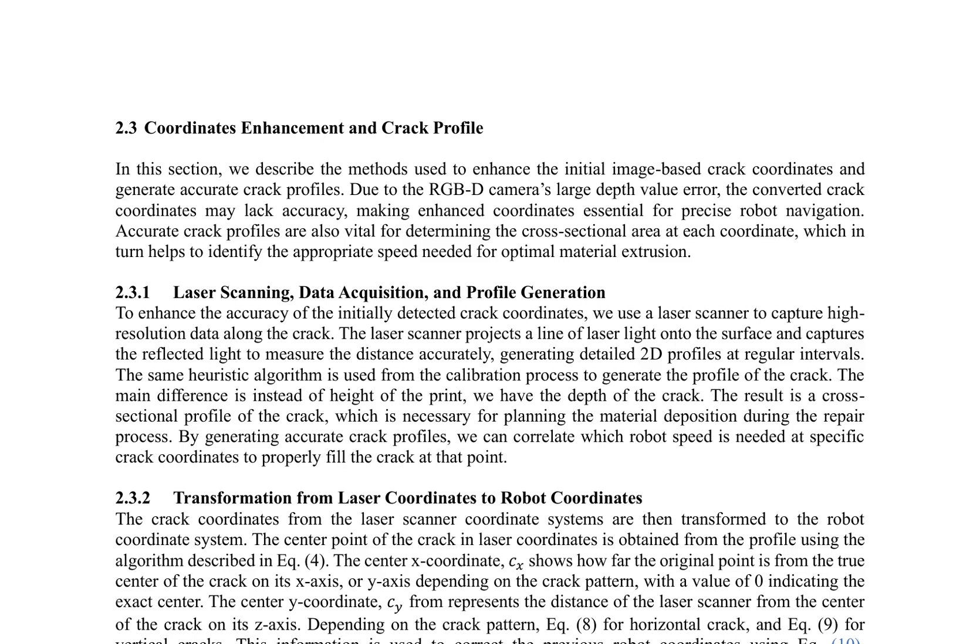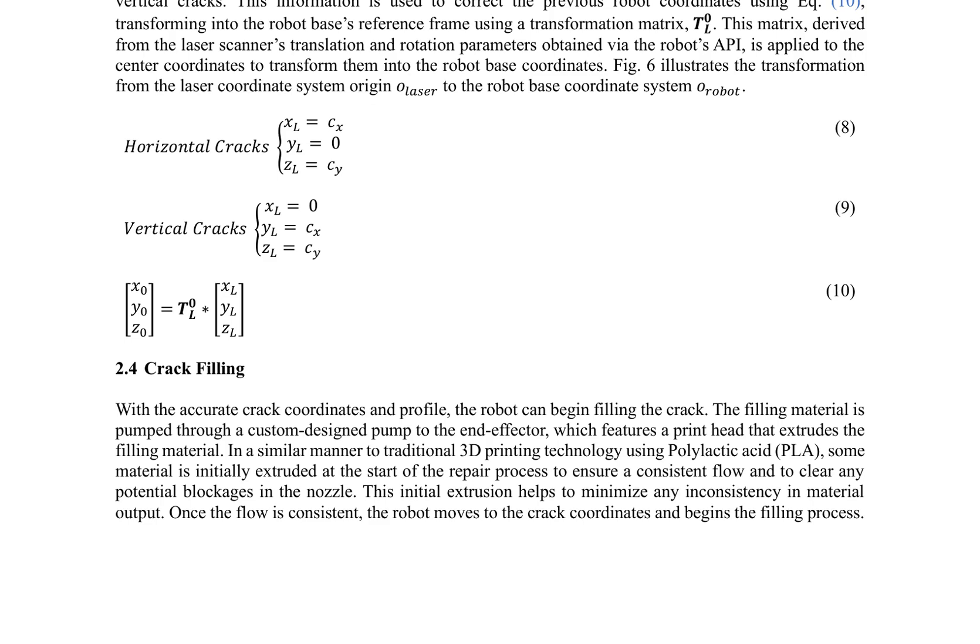The research paper discusses an innovative method for detecting and repairing cracks in concrete structures using a robotic system. It utilizes a combination of RGBD camera and laser scanner to accurately identify cracks, and a robotic arm to fill them with a specialized material. The process involves enhancing initial crack coordinates detected by the RGBD camera through laser scanning, generating detailed 2D profiles, and using a transformation matrix for robot navigation.